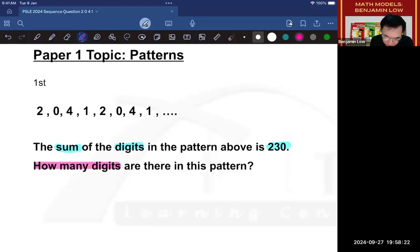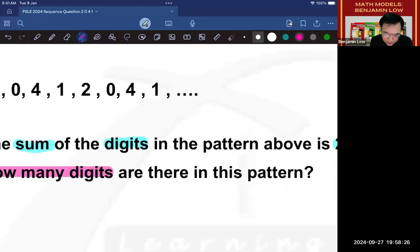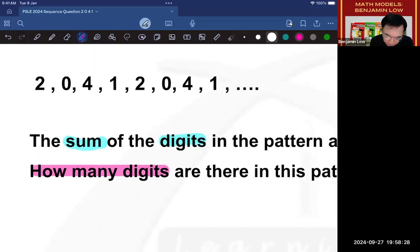So let's get started. What you want to do in pattern questions where there are repeated numbers is that you want to form a group. So this represents a group, so this is one group. The reason why this is one group is because the number starts to repeat over here. So every time it stops repeating, that's when you form a group. So 2041 forms a group, and of course, the next group is also 2041.